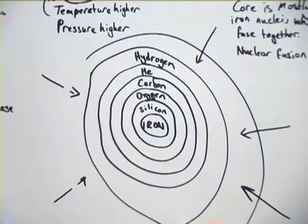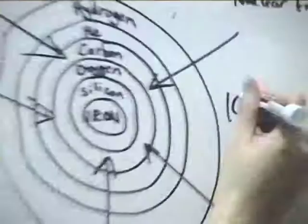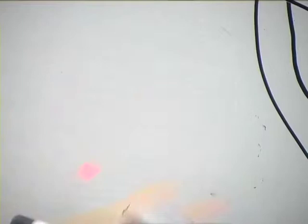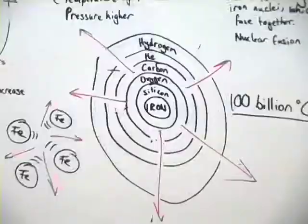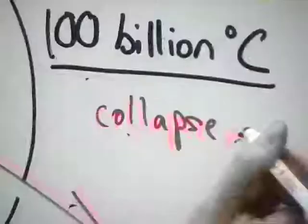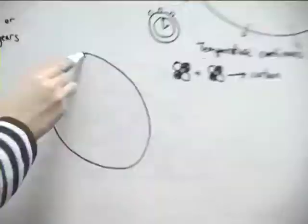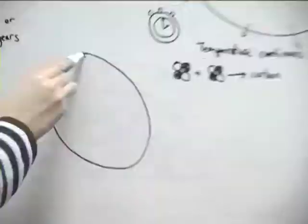The star begins to collapse for the last time, with the core rising to over 100 billion degrees Celsius. The iron nuclei get crushed together but the electrostatic repulsive force between them overcomes the gravitational force so that the collapse recoils and bounces back outwards. The final collapse and recoil all happen in less than a second and an explosive shockwave is created. The shockwave travels through the star's outer layers heating the material it encounters to a high enough temperature so that they begin to fuse to form new elements.